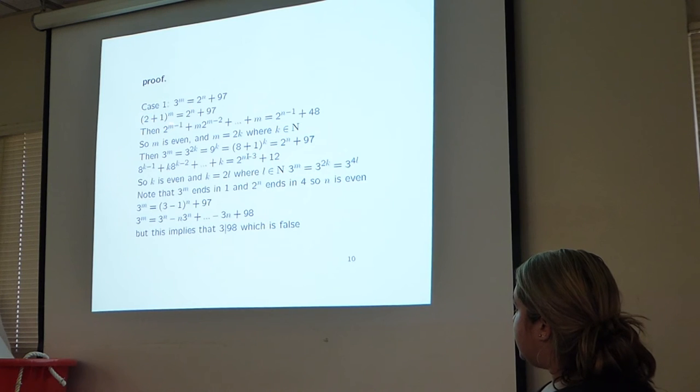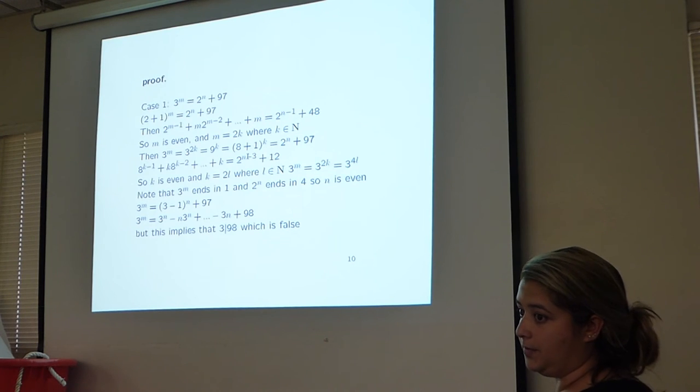We wrote 3 as 2 plus 1, did binomial expansion, and then subtracted the 1, then divided everything by 2. Since all the terms have a factor of 2, then we know that m must be even. It also must have a factor of 2.